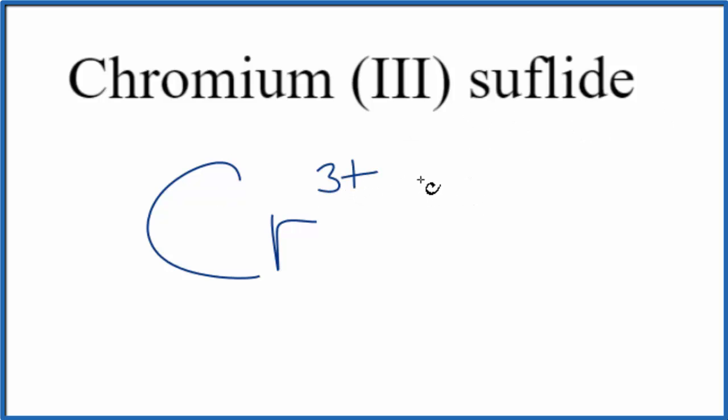Sulfide, that's just S, sulfur. So we have chromium-3 sulfide. We have the Cr, 3+. This is a metal. Sulfur is a non-metal. We have an ionic compound. We need to make sure the charge is balanced.